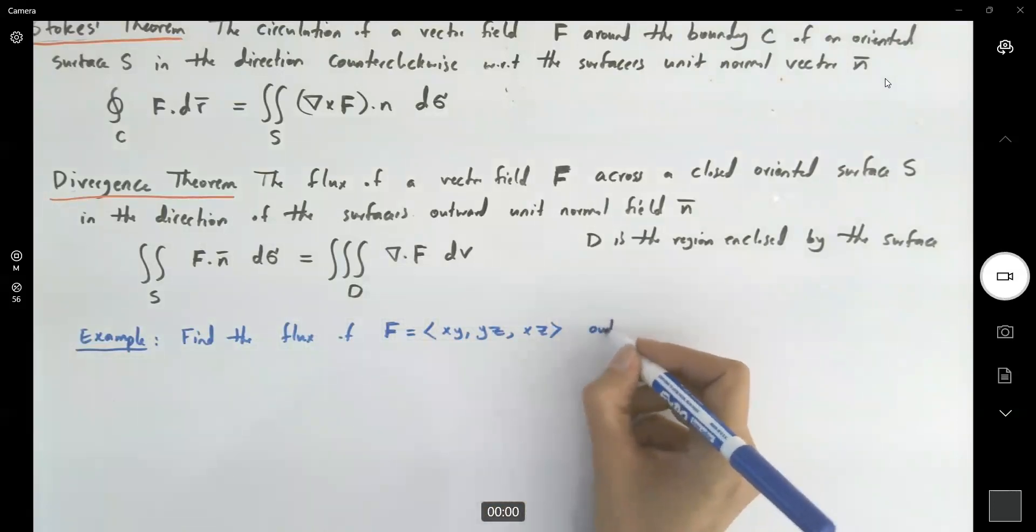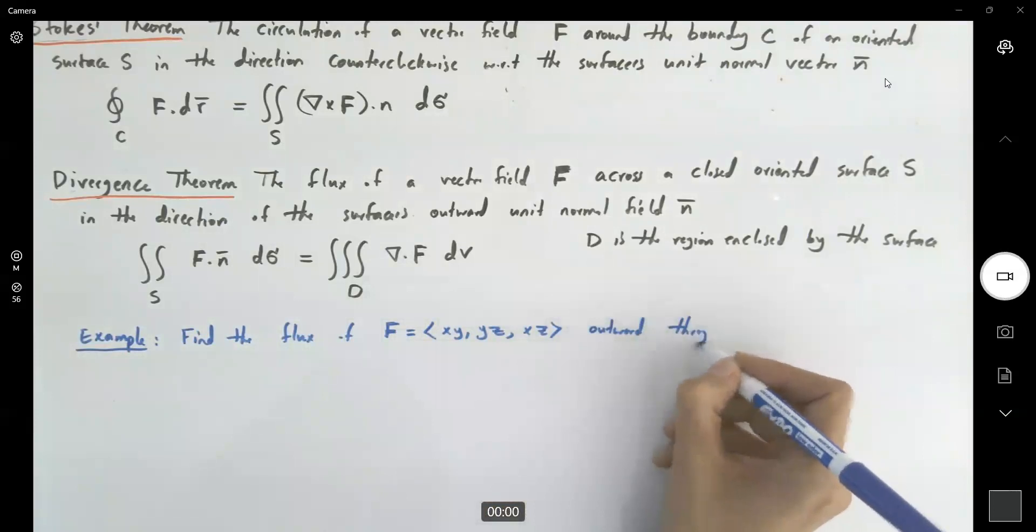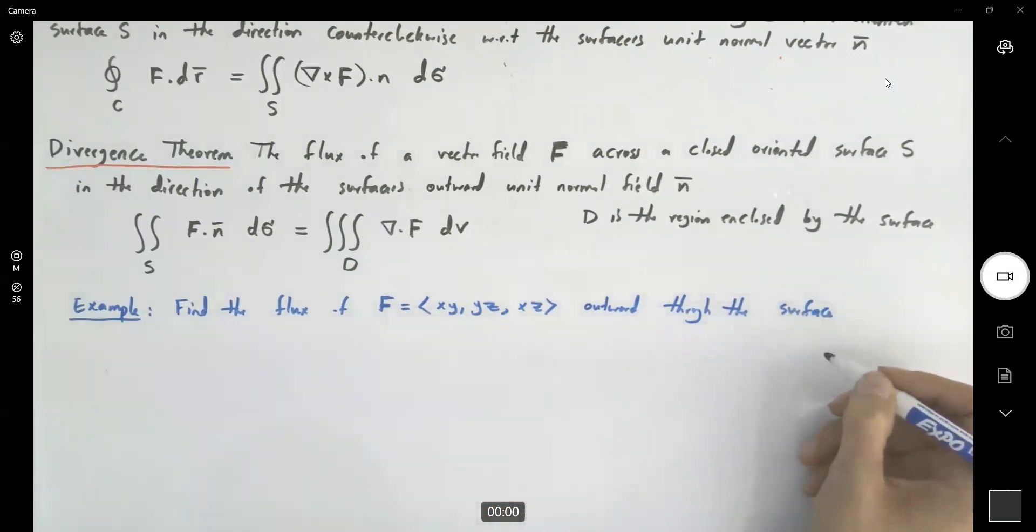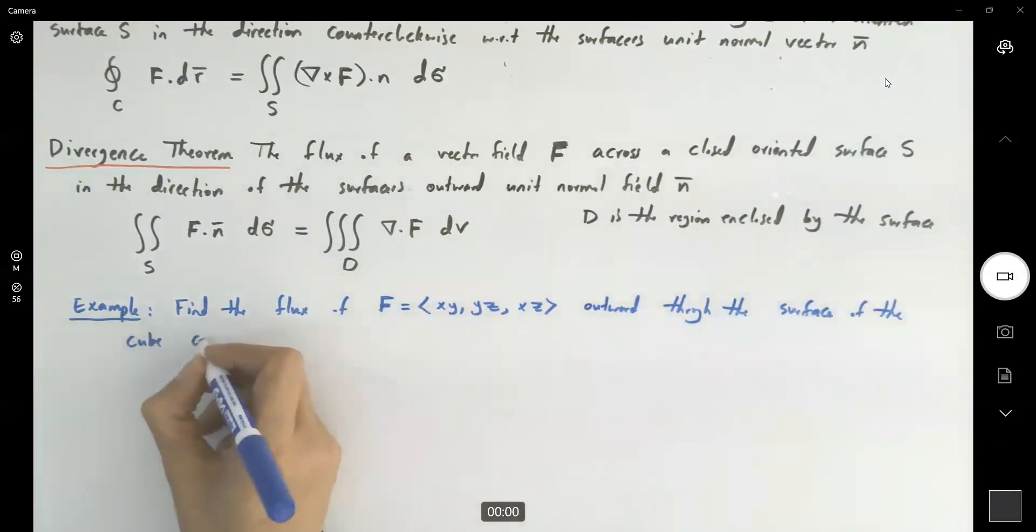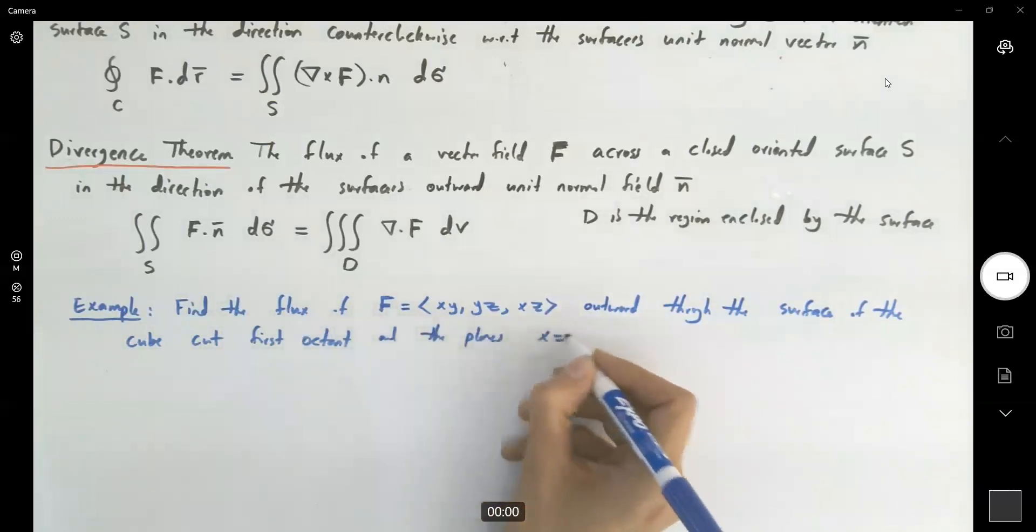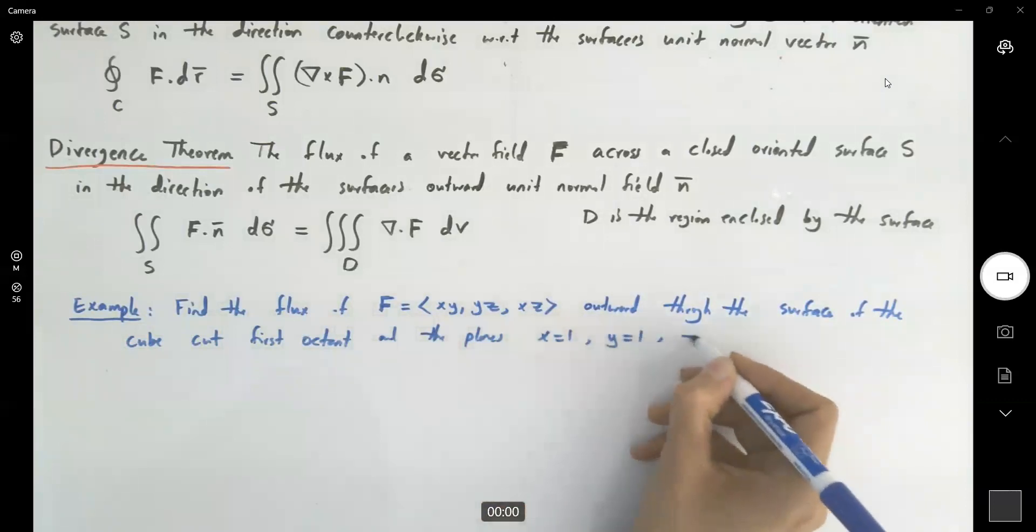Outward to the surface cut from the first octant and the planes x equals 1, y equals 1, and z equals 1.